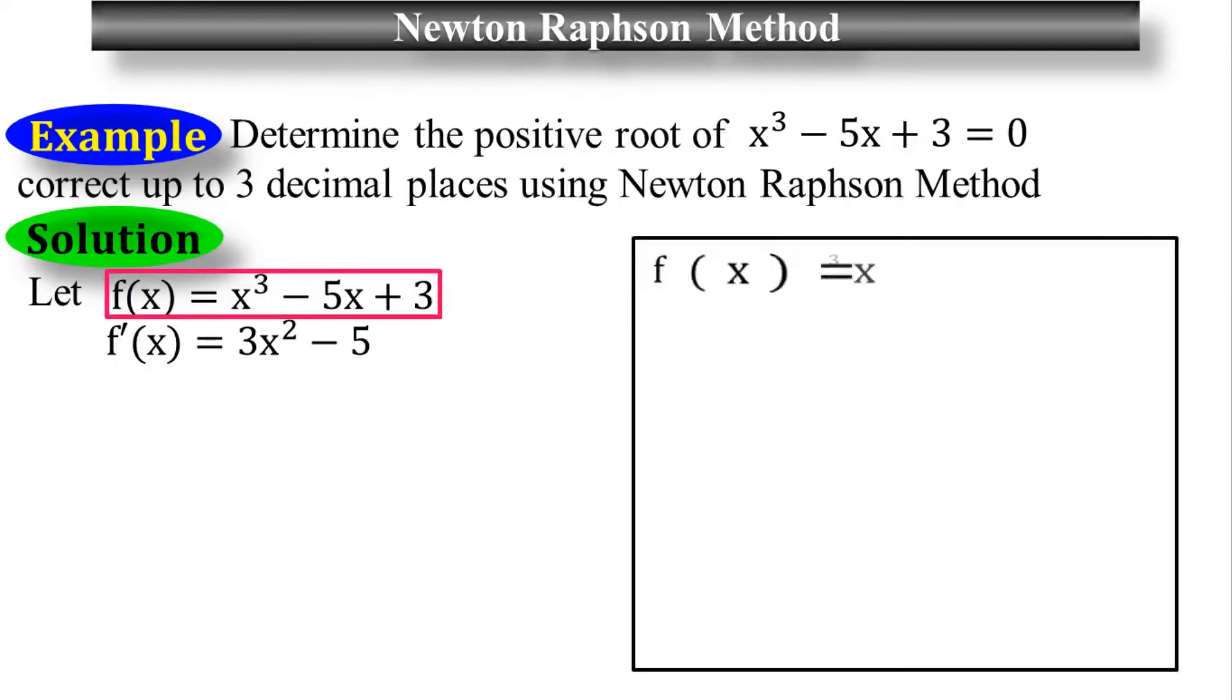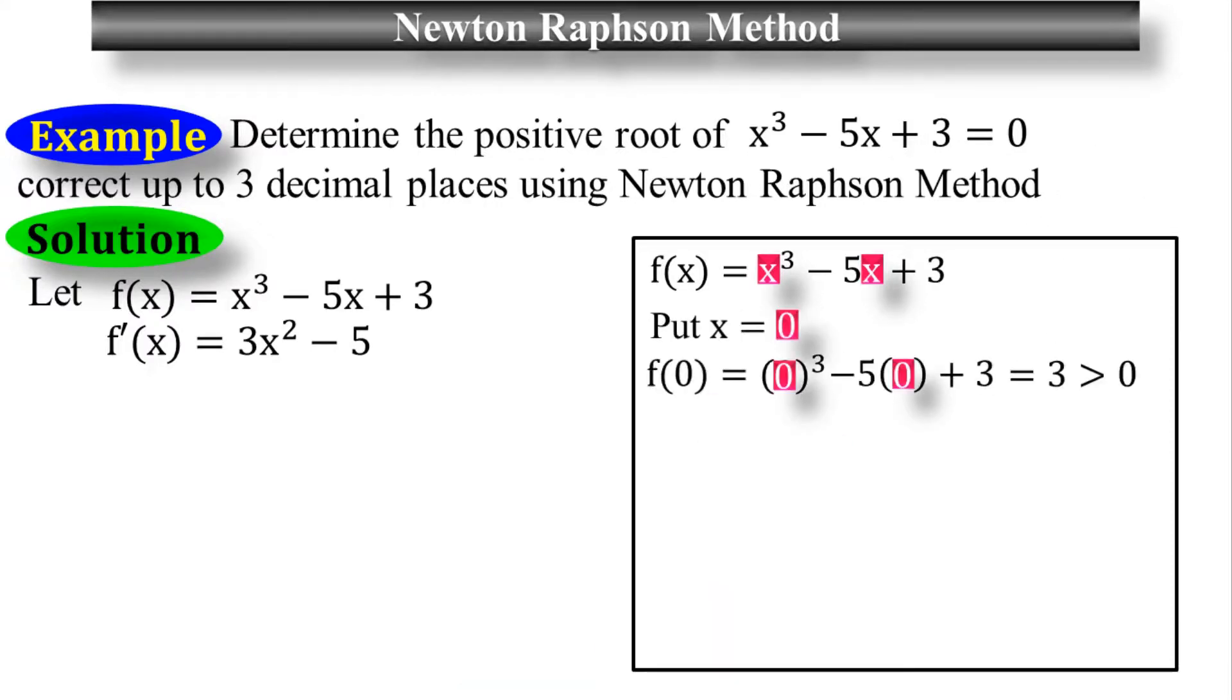Take this function f of x. If I put the value x equals 0 in this equation, I will get 3, which is greater than 0. If I try x equals 1, I will get minus 1, which is less than 0.